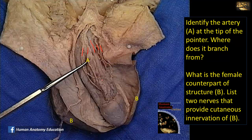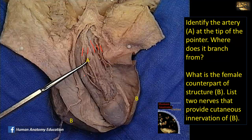What is the female counterpart of structure B? Structure B is the scrotum, and its counterpart in the female is the labium majus — labia majora. Several nerves provide cutaneous innervation: mainly the pudendal nerve providing scrotal branches, but also a perineal branch of the posterior cutaneous nerve of the thigh. Anteriorly, it is also supplied by cutaneous branches from the genitofemoral nerve and the ilioinguinal nerve, but the main innervation comes from the pudendal nerve.